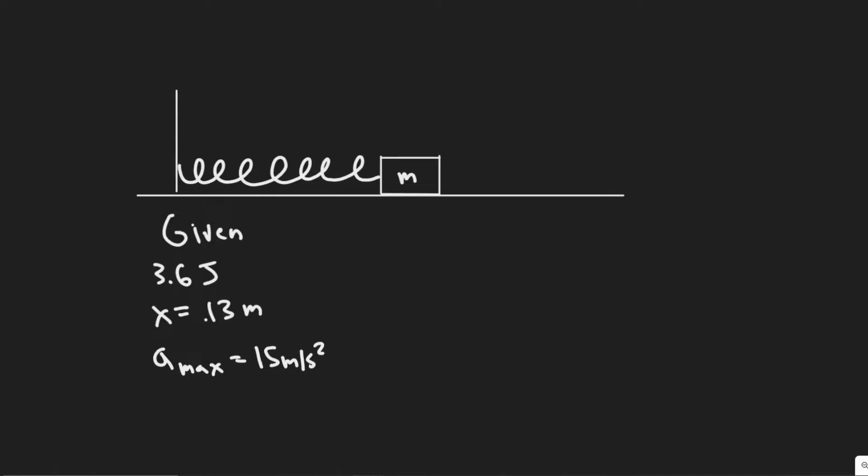It takes 3.6 joules of work to compress the spring by 0.13 meters. If the spring is compressed and the mass is released from rest, it experiences a maximum acceleration of 15 meters per second squared. Find the value of A, the spring constant, and B, the mass.